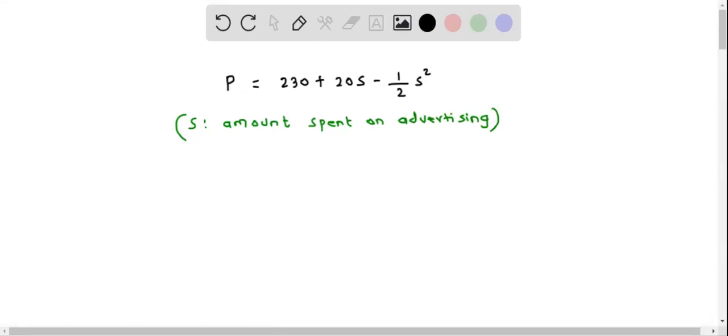In this question, we are given the profit for a certain company by this equation: P equals 230 plus 20S minus half S squared, where S represents the amount spent on advertising, and we have to find the amount which gives the maximum profit.